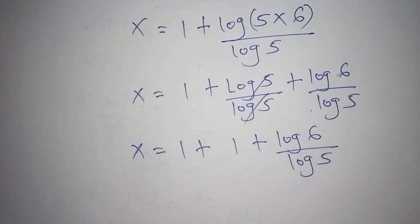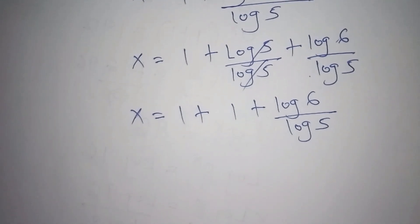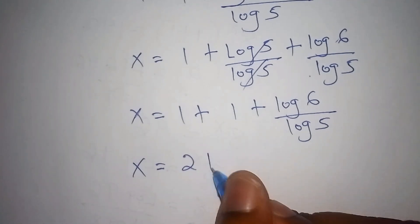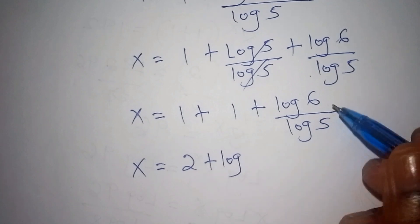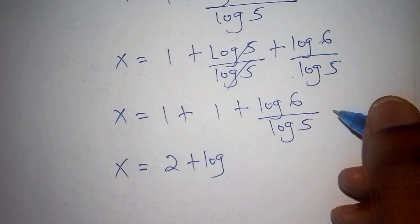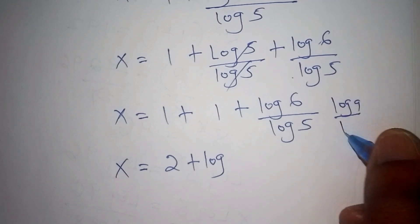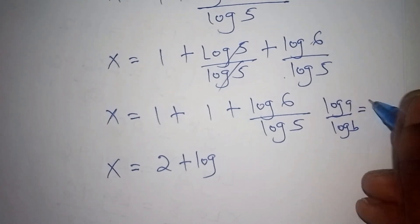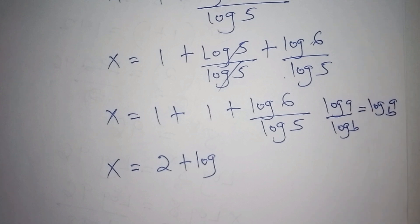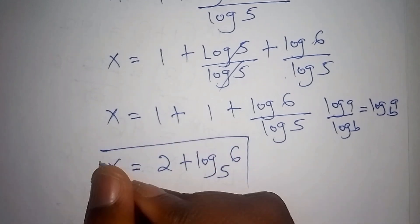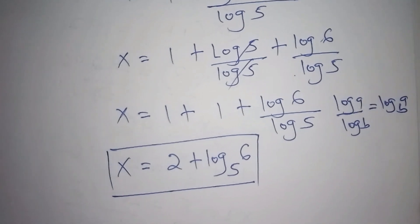From there we simplify: 1 plus 1 gives us 2, so x is equals to 2 plus the log of 6 all over the log of 5. Now the log of A all over the log of B can be expressed as the log of A to base B. So in this case we express this as the log of 6 to base 5. Therefore our value of x is equals to 2 plus log base 5 of 6.